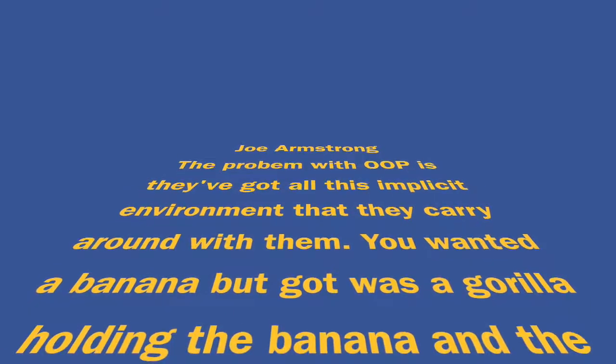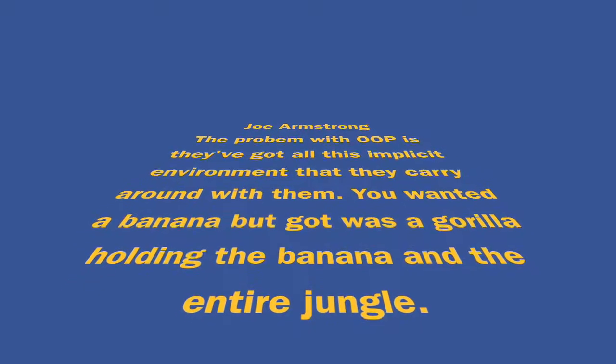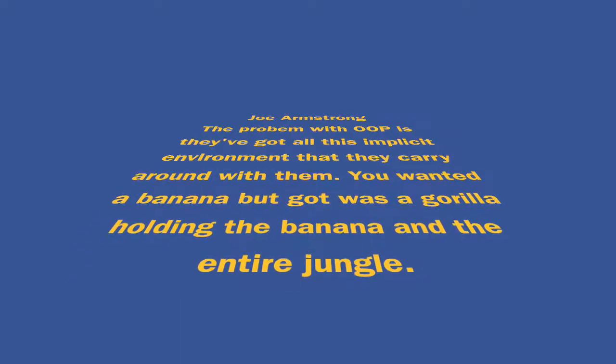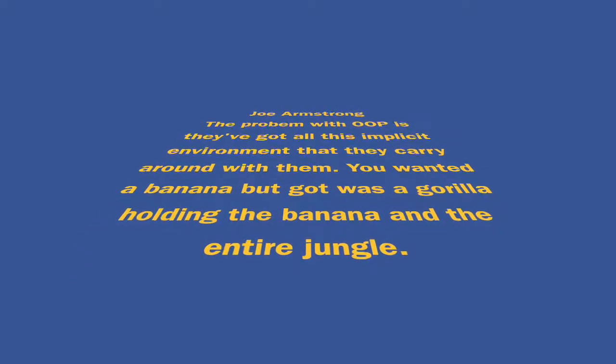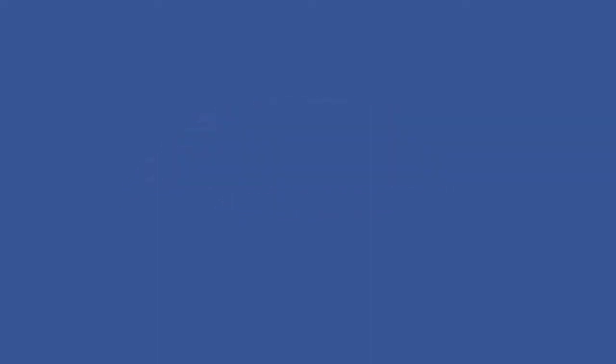The problem with object-oriented programming is it carries all this implicit environment around with it. As someone said: you wanted a banana, but you got a gorilla holding the banana and the entire jungle. What that means is our object model is not clean over time — it becomes intermingled with infrastructure code and other concerns.